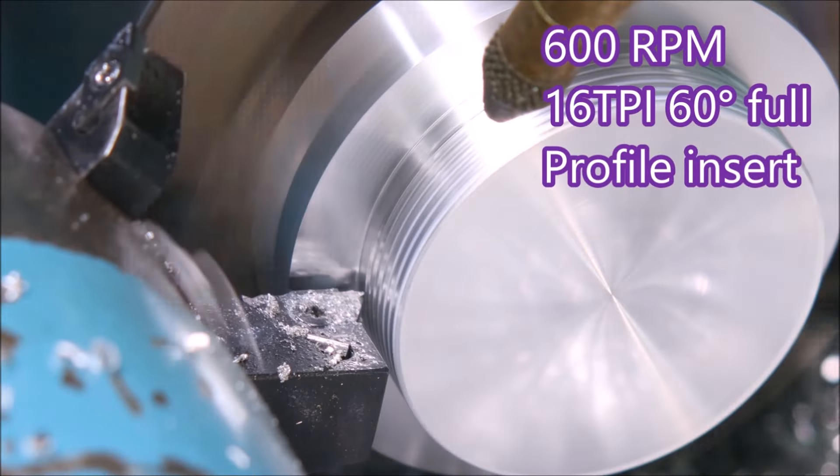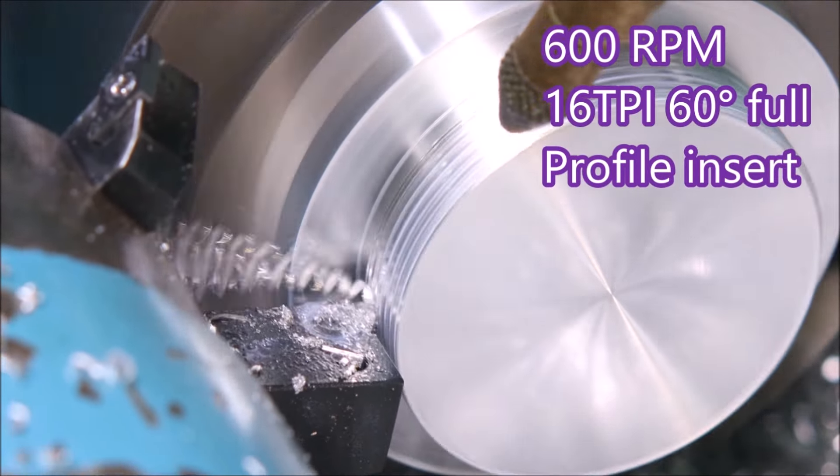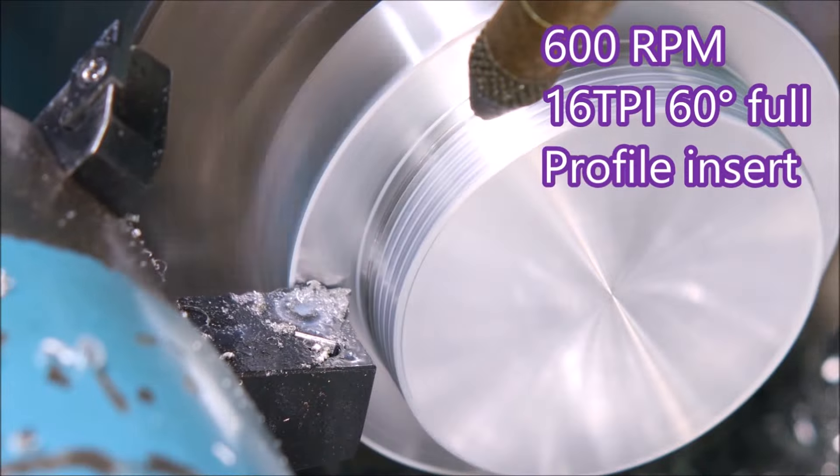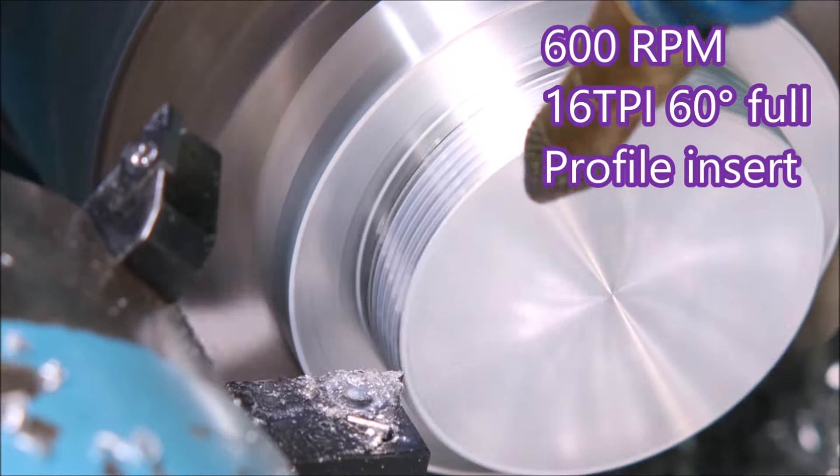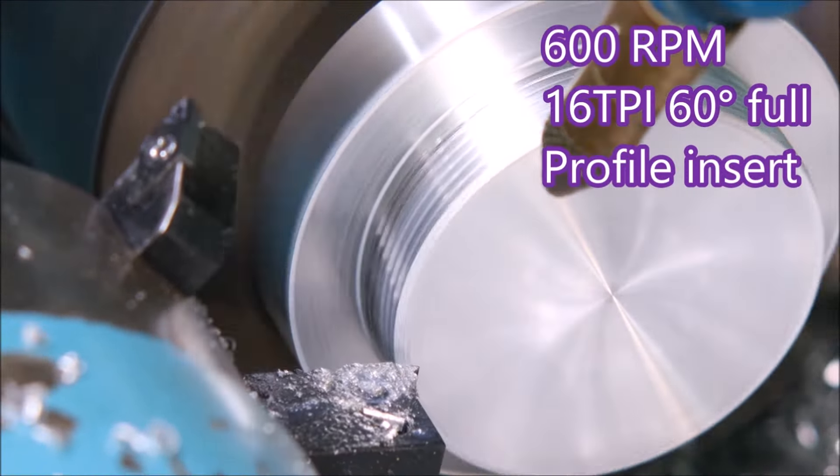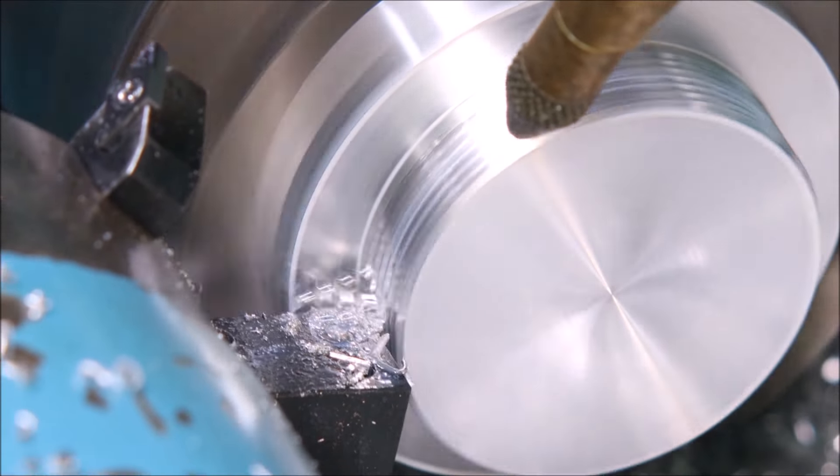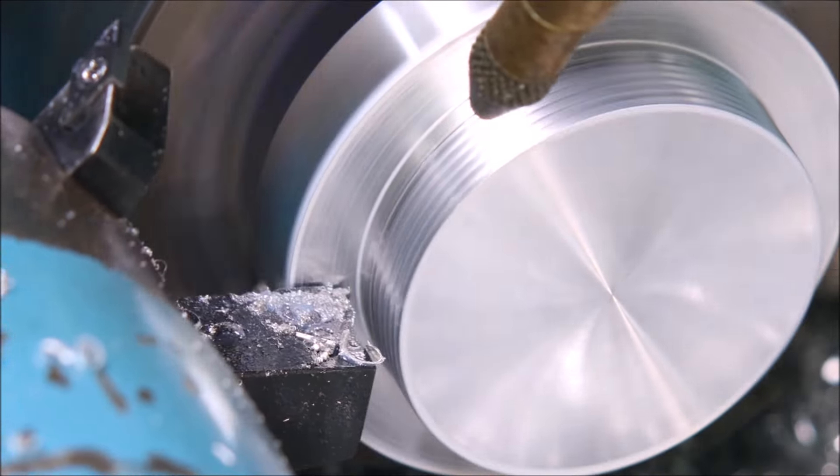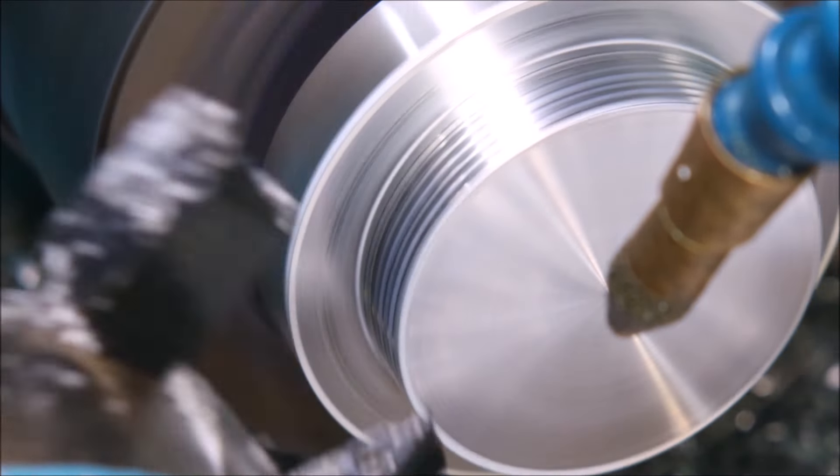The speed here of the spindle is down to 600 RPM because my Z axis just can't travel fast enough with a thread of this pitch to keep up with it. And this last pass is actually just a spring pass.